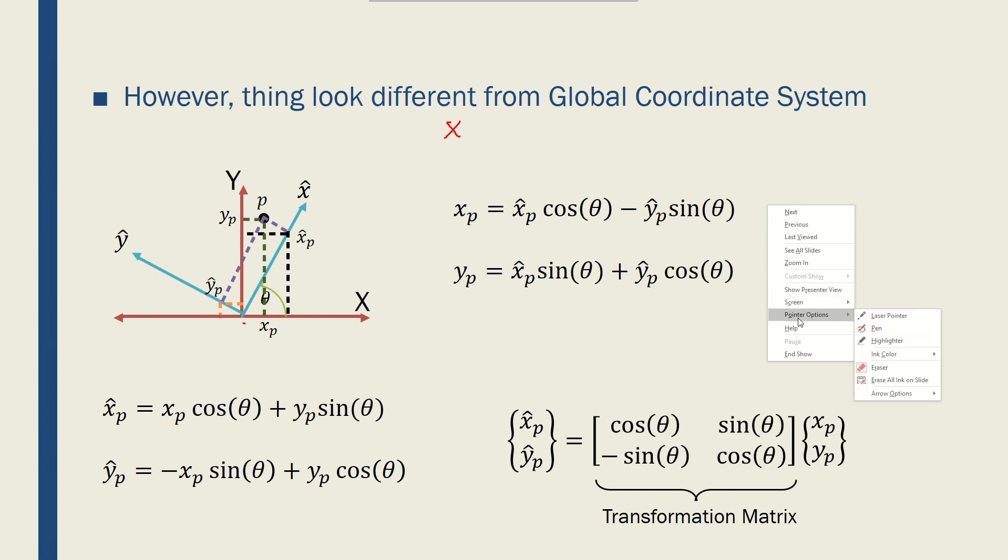In the global coordinate system, I have xp and yp for the point P, or the arbitrary point. And in the local coordinate system, x hat, y hat, I can have x hat p and y hat p as the coordinates of the point.